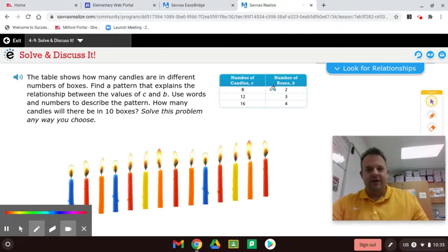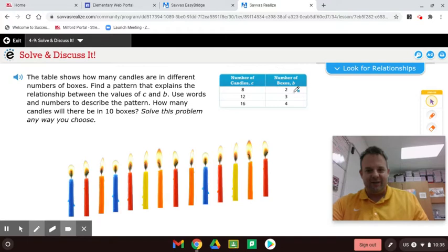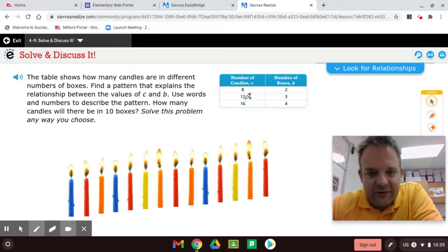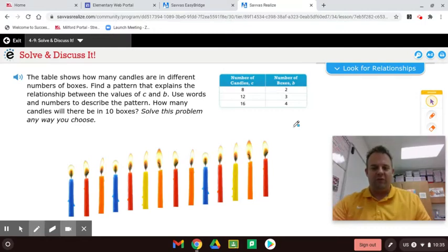Let's check it out. The number of candles C is 8 and the number of boxes B is 2. The number of candles here is 12 and the number of boxes is 3. The number of candles is 16 and the number of boxes is 4. What kind of pattern do we see here?